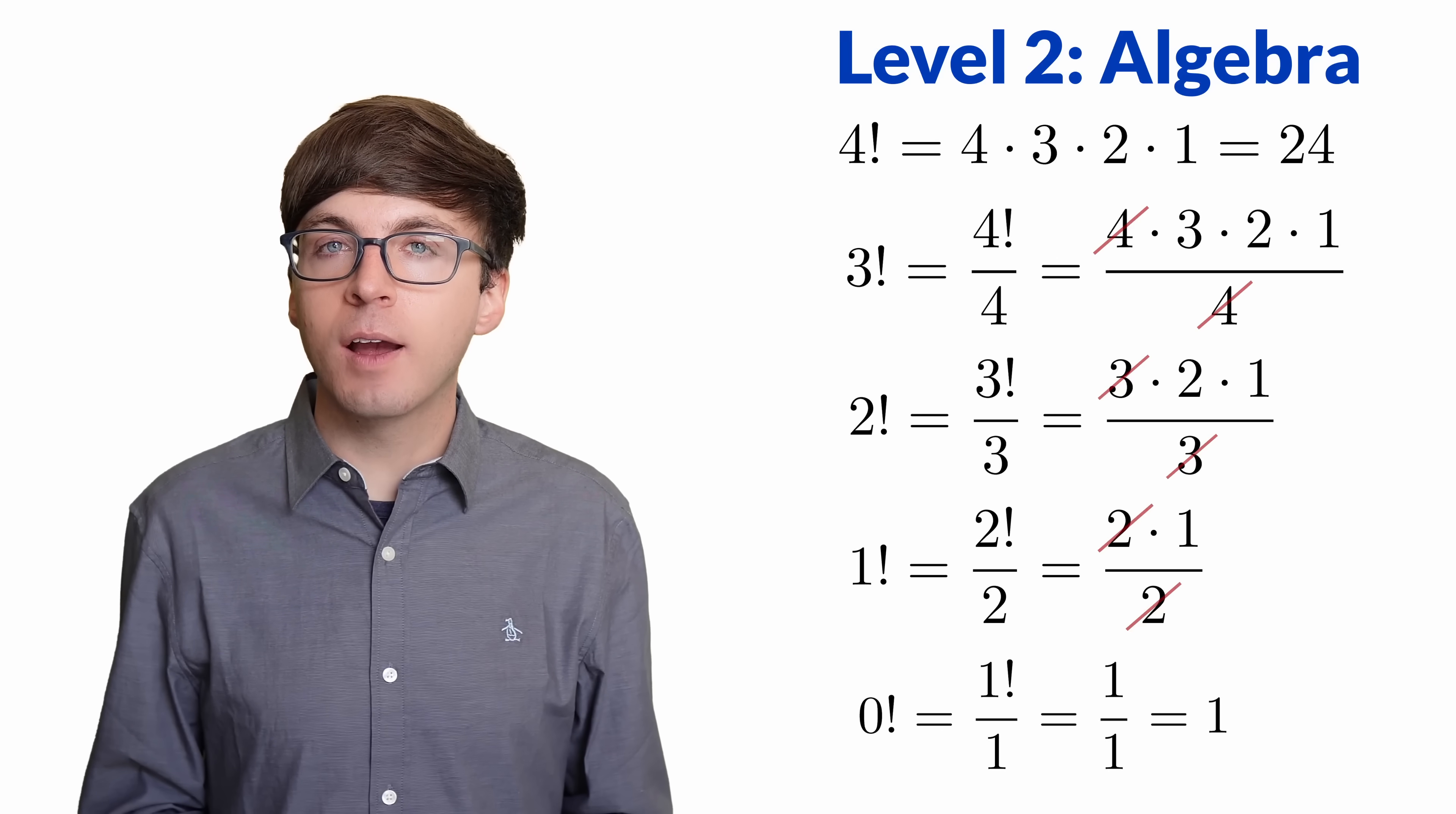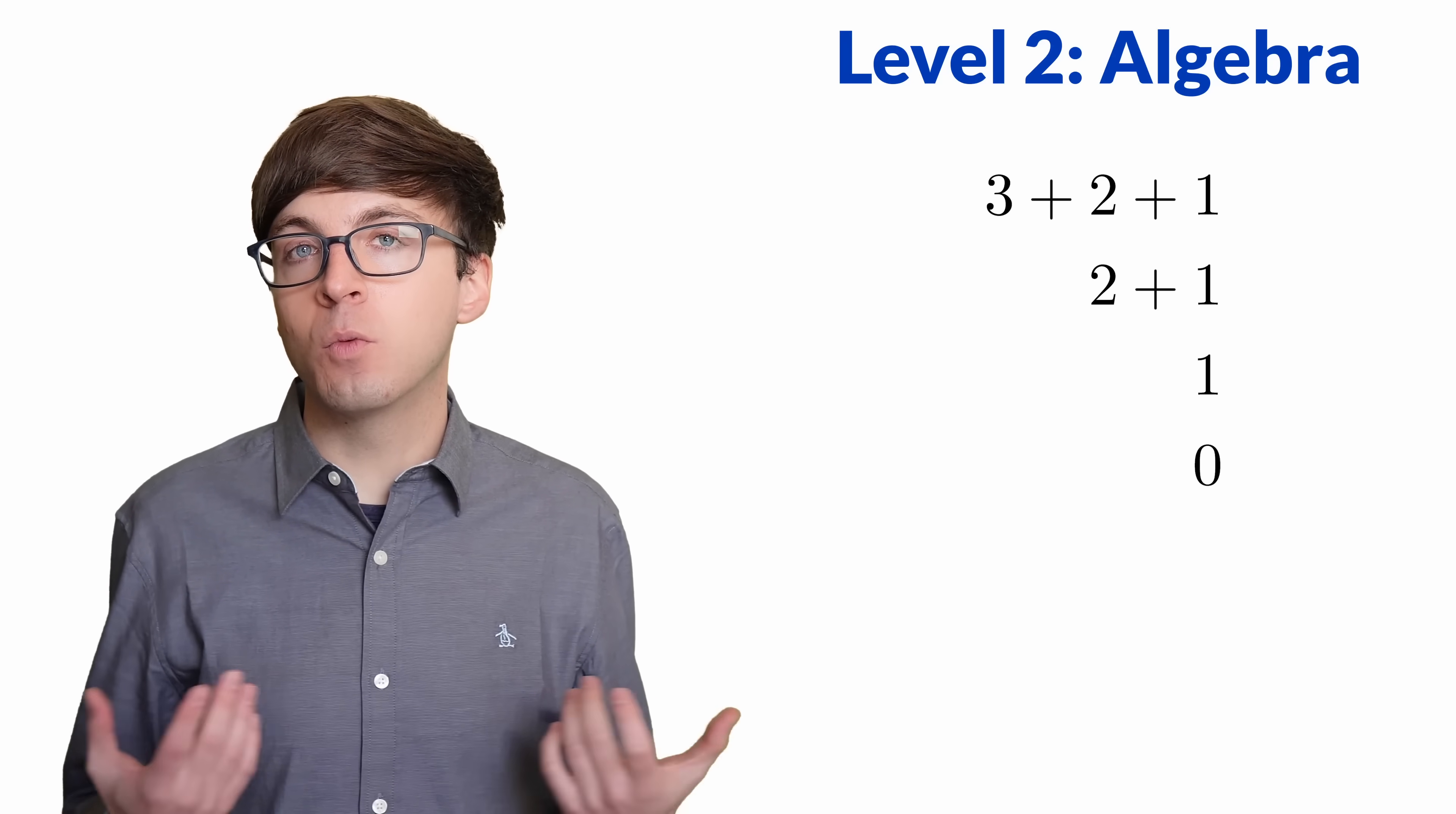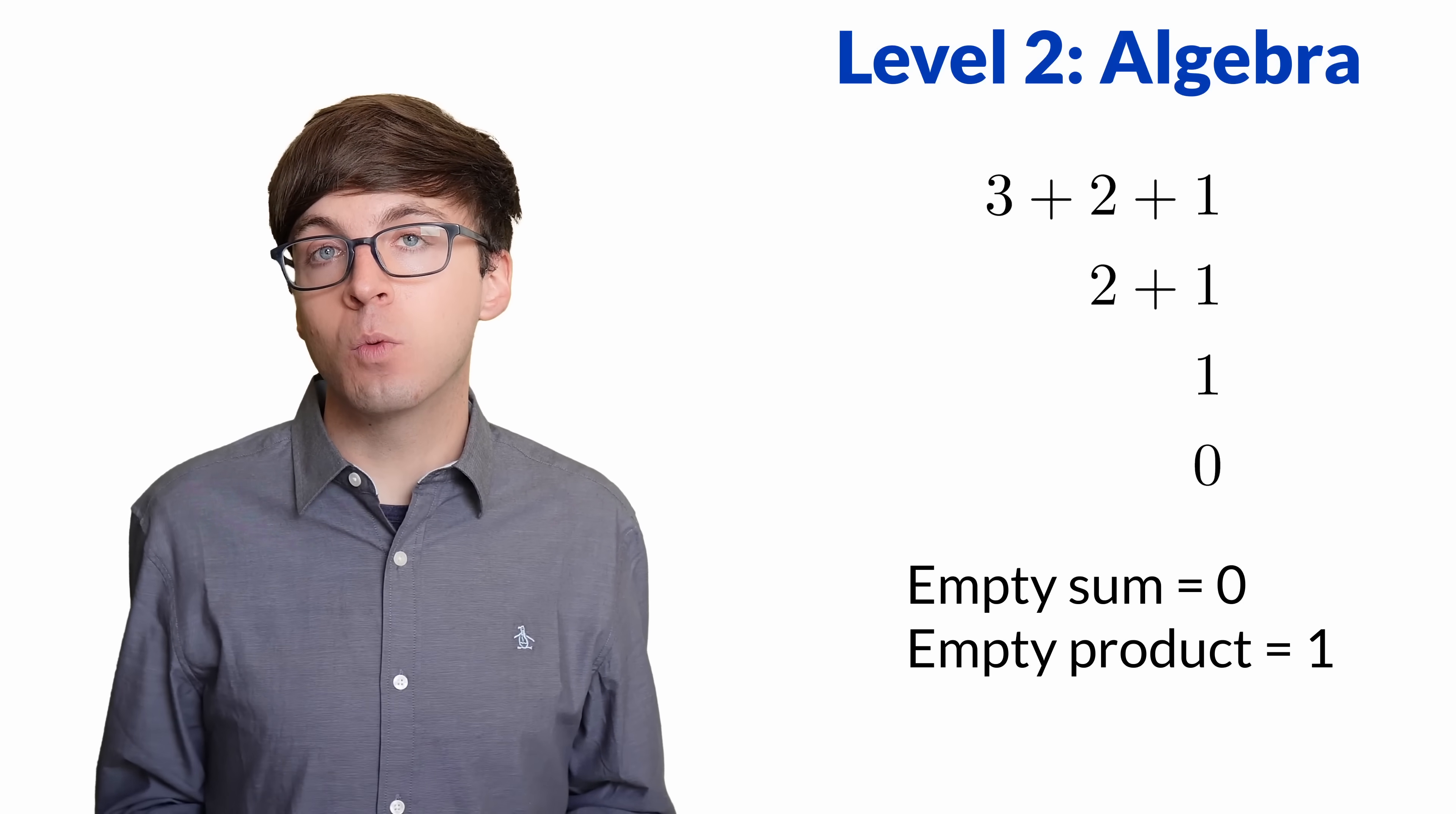I think some of the confusion arises because an empty sum is equal to 0. Say we're adding 3 plus 2 plus 1. When we remove the 3, we subtract it. And then we subtract the 2, and then we subtract the 1. Then what we're left with is 0, the additive identity. Adding 0 doesn't change a value, so an empty sum should equal 0. But for multiplication, the identity is 1. So an empty product like 0 factorial should equal 1.